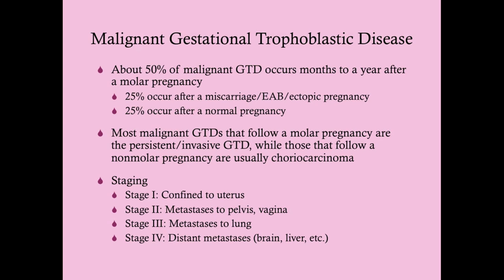25% can occur after a normal pregnancy, which is less clear mechanistically. Most malignant GTDs that follow a molar pregnancy are going to be the persistent or invasive GTD. Those that follow a non-molar pregnancy are usually choriocarcinoma. This is because the complete molar pregnancy, which is the most likely to turn into malignant GTD, is very much associated with a higher predilection to develop persistent or invasive GTD.